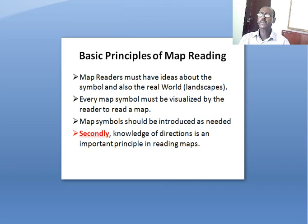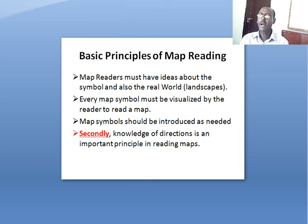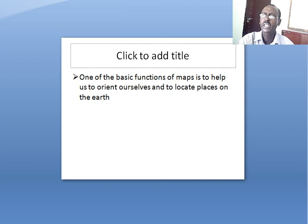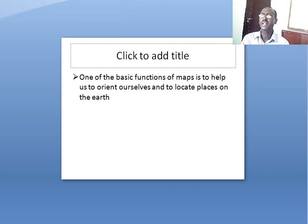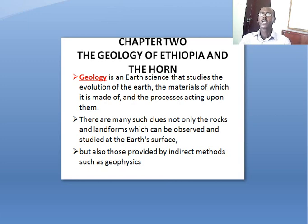The basic principles of map reading are: map readers must have ideas about the simple and also the real world or landscapes; every map symbol must be visualized by the reader; map symbols should be introduced as needed; knowledge of direction is an important principle in reading maps; and finally, one of the basic functions of maps is to help us orient ourselves and to locate places. Map reading is very important, and that concludes the introduction to Ethiopia and the Horn under chapter one.